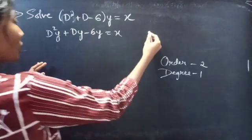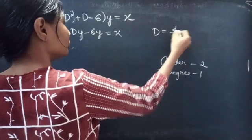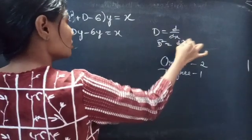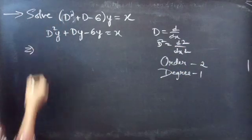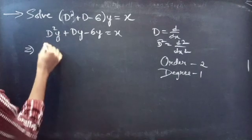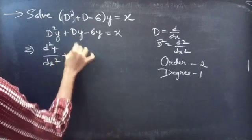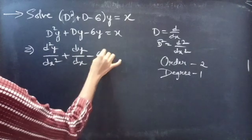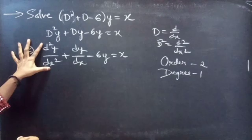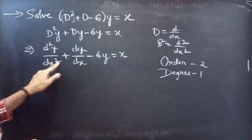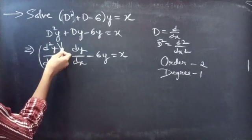We know that D is a differential operator. We can write D² as d²/dx². So the differential equation becomes d²y/dx² + dy/dx − 6y = x. Here, d²y/dx² is the highest derivative, so our order will be 2, and the highest power of the highest derivative is the degree — degree is 1.